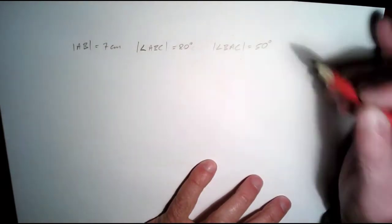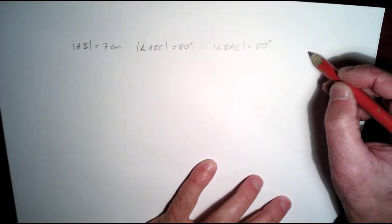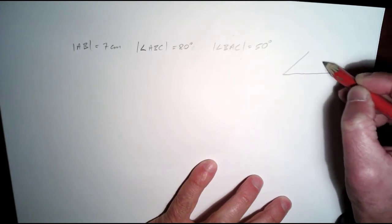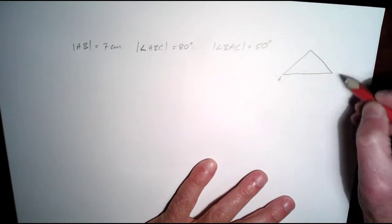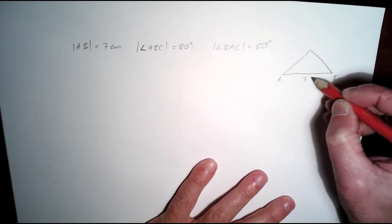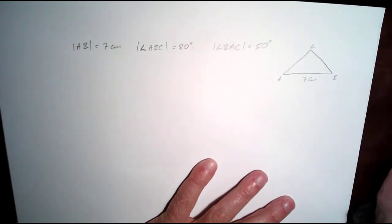So again, let's just draw a rough sketch of our triangle. So I'm going to say the base here AB is 7 cm. So that's A, that's B. I'm going to have 7 cm here, so this must be C. So we have ABC is 80 degrees.